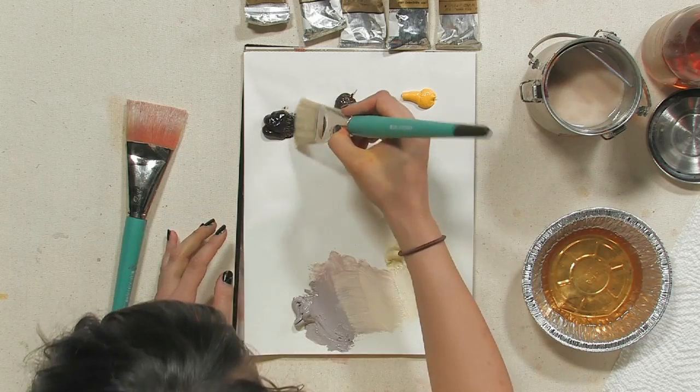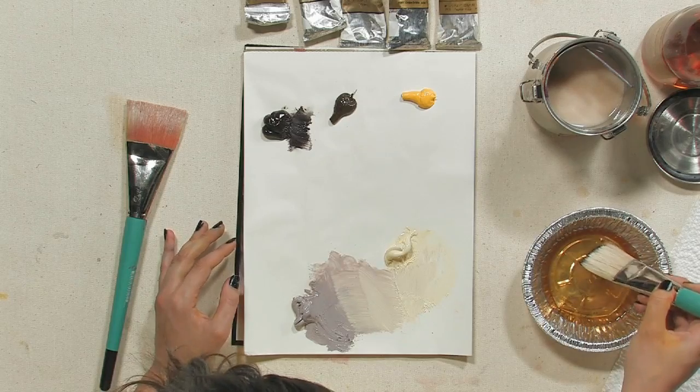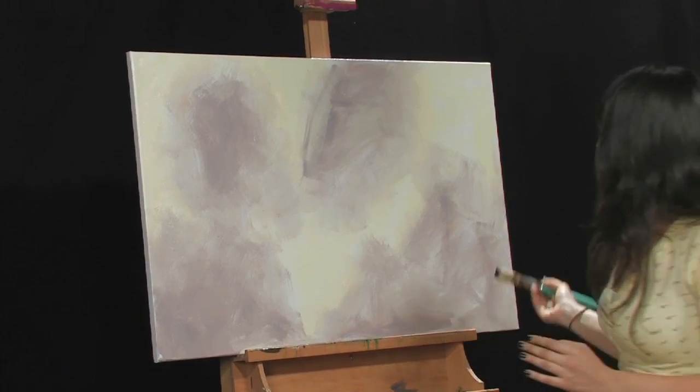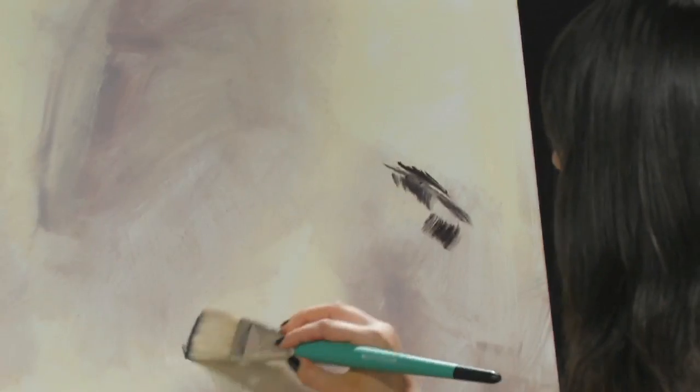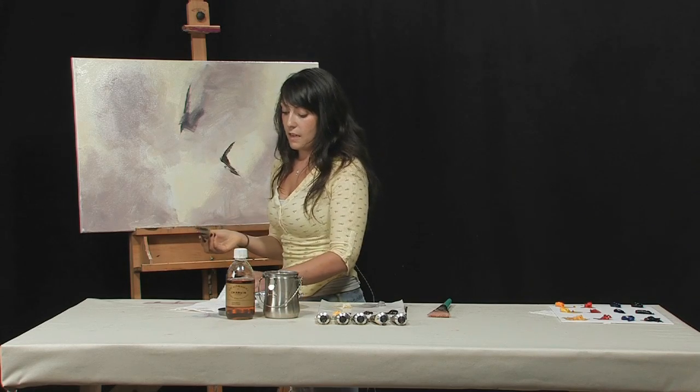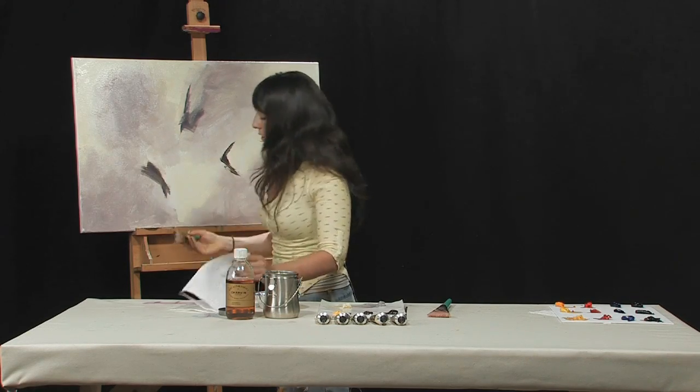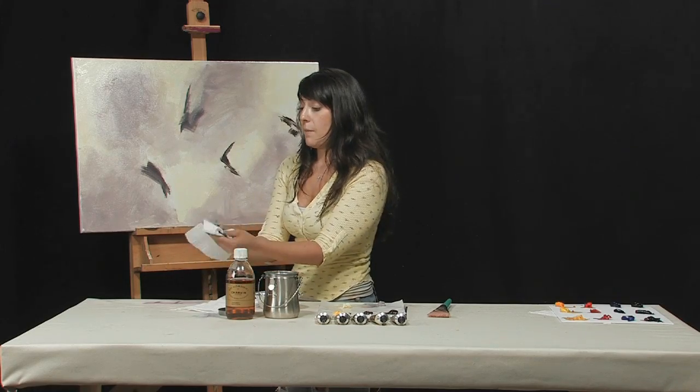So I'm going to start with a little bit of Van Dyke brown. Again, painting medium. And that right there is good enough for me for the amount of paint that I'm planning on using.